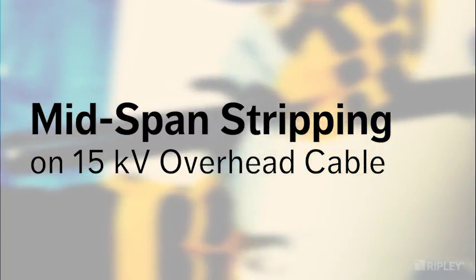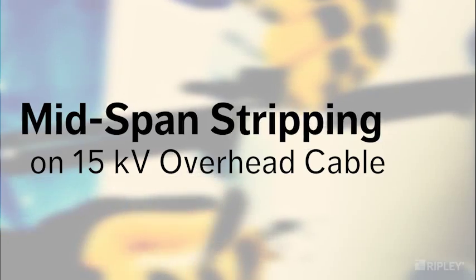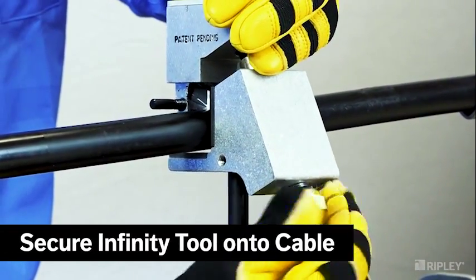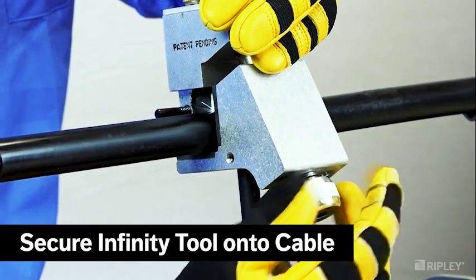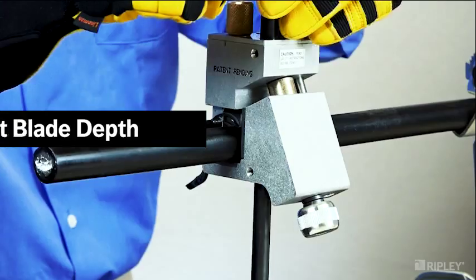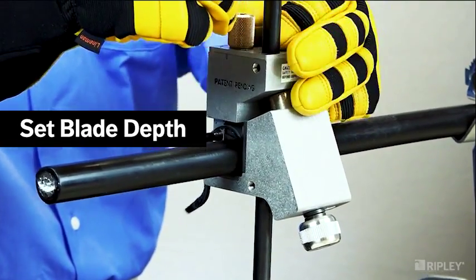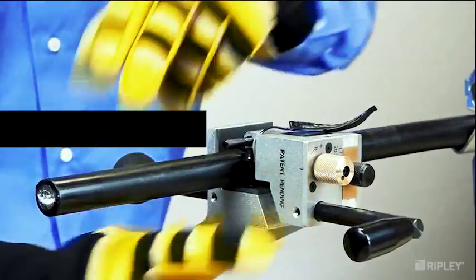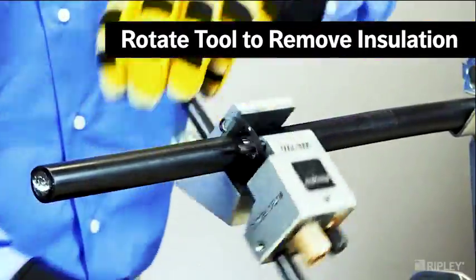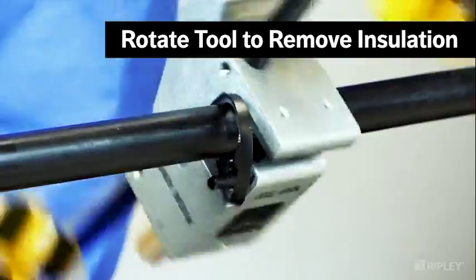To begin stripping the insulation from the mid-span on 15 kV overhead cables, secure the Infinity around the mid-span where the strip length has been marked. Adjust the blade angle to 0 degrees for a squared edge and slowly adjust the blade depth down to the conductor. Rotate the tool to remove a channel of insulation to expose the conductor.